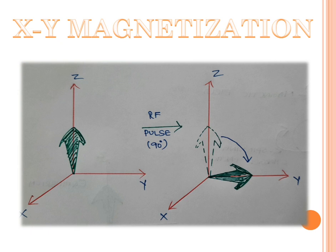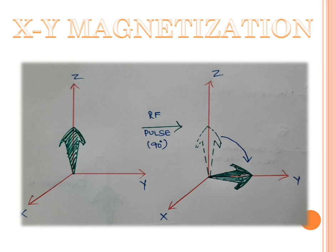If you disturb the equilibrium condition, in the first image you can see that the net magnetization is along the Z axis with no X or Y component — the equilibrium condition. Now if you apply a 90-degree RF pulse, the magnetization that was along the Z axis shifts towards the Y axis or the XY plane. When the magnetization moves towards the XY plane we call it XY magnetization or transverse magnetization, while magnetization along the Z axis is called Z magnetization or longitudinal magnetization.